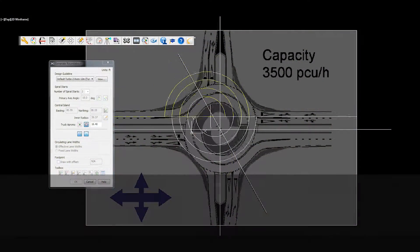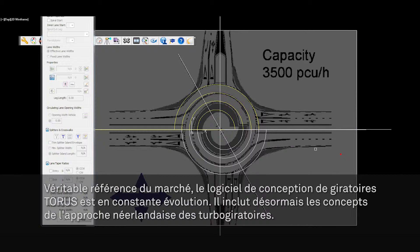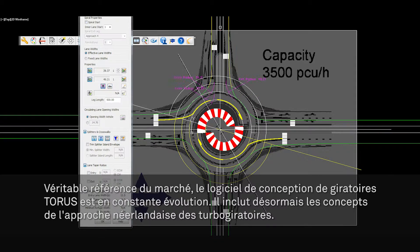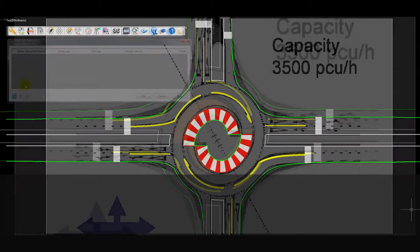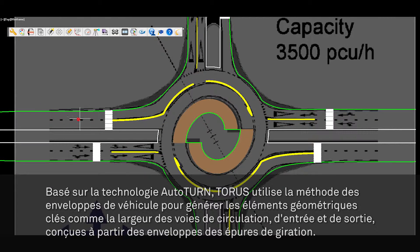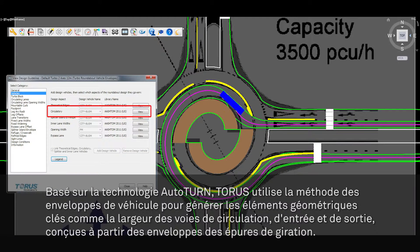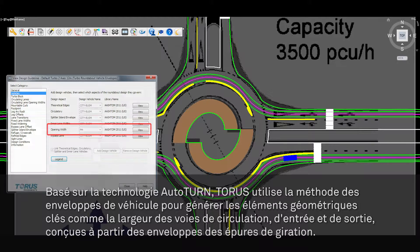As the premier geometric design solution for modern roundabouts, Taurus continues to evolve and now incorporates concepts with the Dutch design methodology for creating turbo roundabouts. Powered by the trusted AutoTURN technology, Taurus uses the vehicle envelope method of design to generate key geometric elements such as circulatory lane widths, entry and exit lane widths,